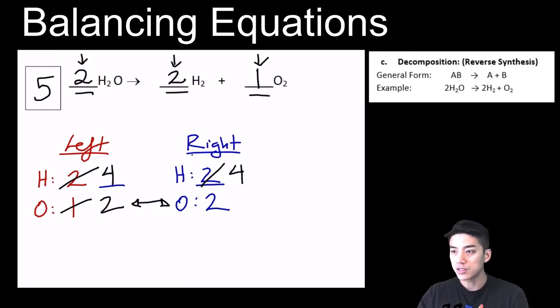This type of equation right here is known as a decomposition, where you start off with something like water, H2O, and it splits up into two different components. So this is known as decomposition. Sometimes people refer to it as reverse synthesis. And you'll see it in this general form where it's some compound AB and it breaks down into A and B.